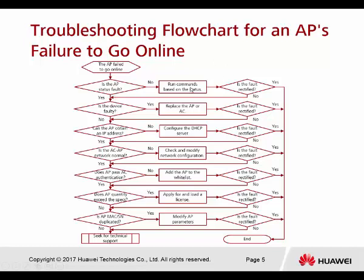We can run some commands to check the status. When using the CLI, you can use 'display AP all'. When we check and notice there's no problem — is it a fault? If the answer is yes, then there's no problem anymore and we end the case. When we still haven't solved the problem, checking with the display command shows there are still some faults. Now continue to the next step: check if the device is faulty.